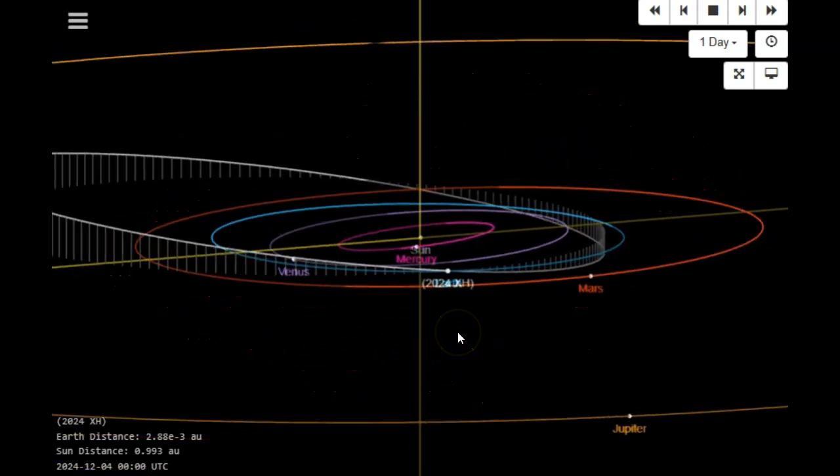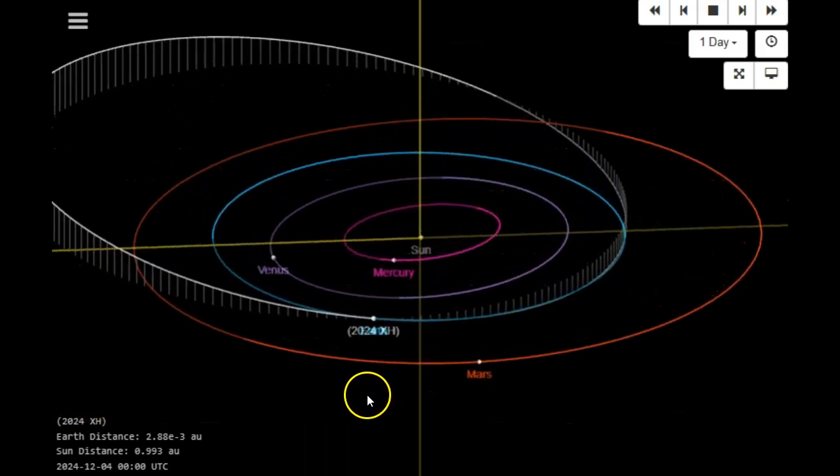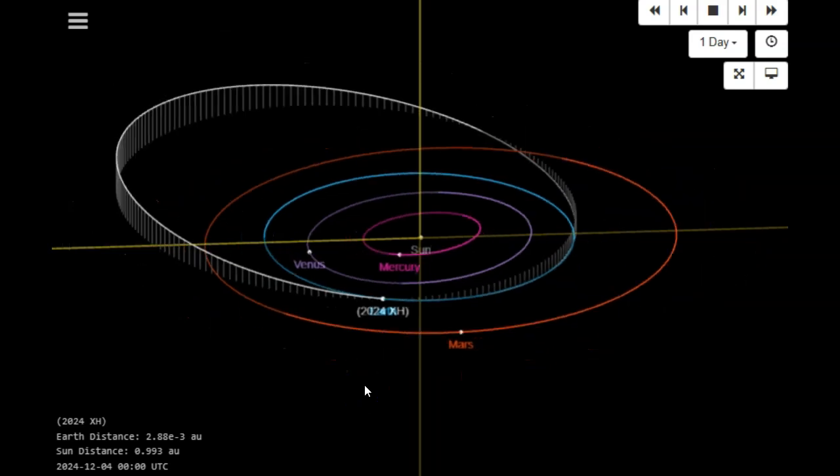It's also at a fairly good inclination. So the rock is large, it's moving fast, and it's at a good inclination. If it does enter Earth's atmosphere, I don't believe that it will burn up. It will cause a large explosion and will probably hit the ground. That's if it makes it into Earth's atmosphere, although it's supposed to go a little bit closer to the moon than Earth.